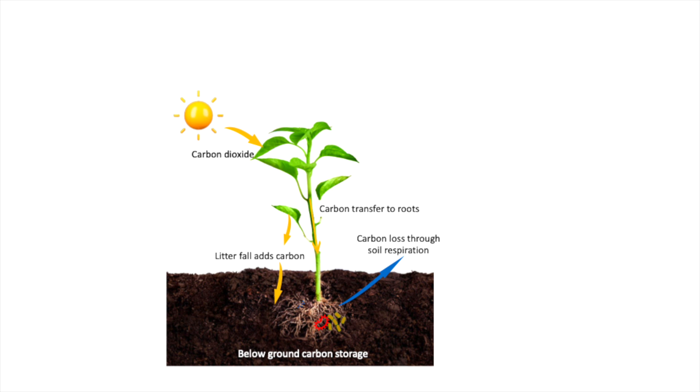Atmospheric carbon fixed in the leaves and branches is transferred down through the roots to the soil. Plants exude carbon through their roots to feed soil microorganisms.